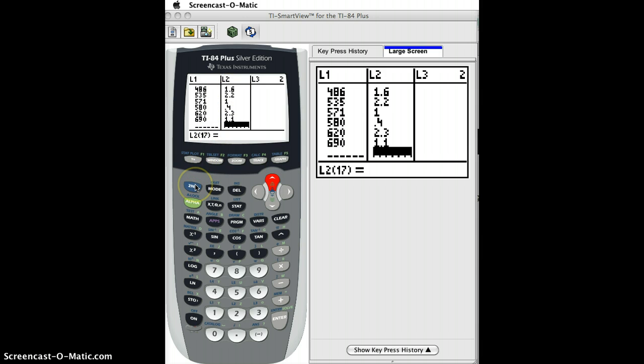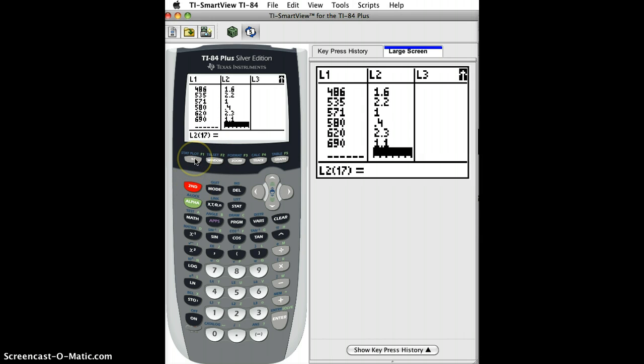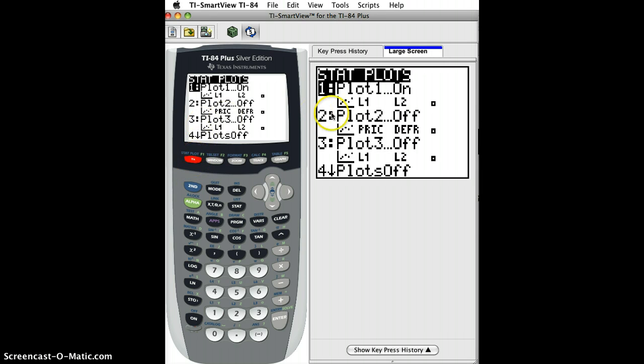The next thing I want to do is make my scatter plot. To do that, I just do second stat plot, remember? And I can see on the big screen over here that plot one is on.